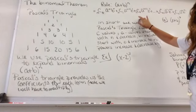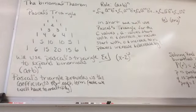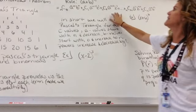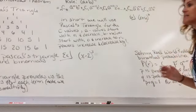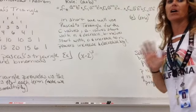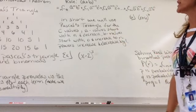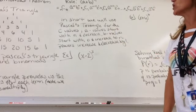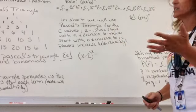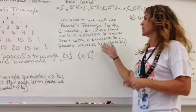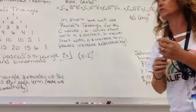Now, up here, we have this rule. Let's see if I can move the board down so you guys can see the whole rule. And this is the expansion. It looks like a big, crazy mess, and it kind of is, but I'm going to teach you how to use it so it won't be so bad. In short, we're going to use Pascal's Triangle for the c values. A values start with n and decrease, so n is your highest power. And b values start with zero and increase to n. The powers increase and decrease only by one unit.